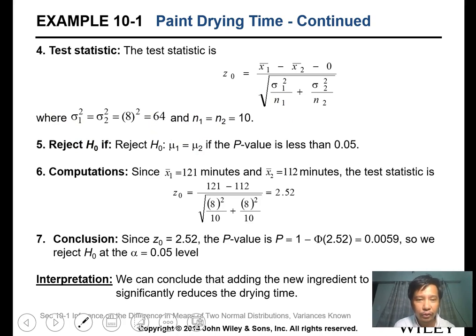The rejection criterion is when the p-value is less than 0.05. For the computation, we calculated using direct substitution in the formula, getting 2.52. This value, when you calculate the p-value, is 0.0059, which is less than 0.05. Therefore, we will reject H0 at 5% significance level. The interpretation: you can conclude that adding the new ingredient to the paint significantly reduces the drying time.